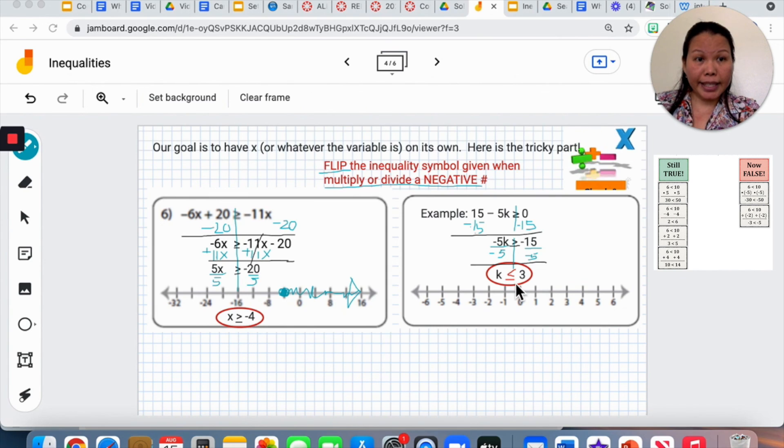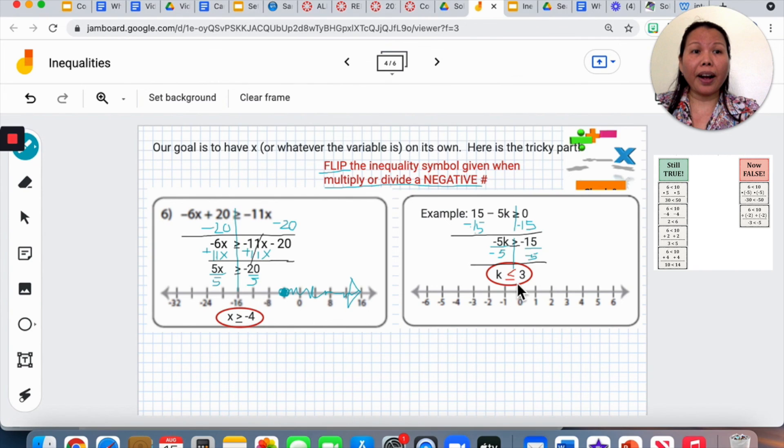K is less than or equal to 3. And when it's less than or equal, there's an equal in there. I'm going to make a solid dot instead of an open dot on the positive 3.